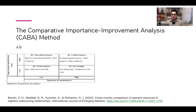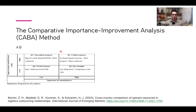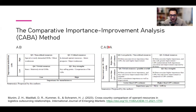Hello everyone, welcome to Research Hub again. This is the final part of the KABA method video, where I'm going to show you the Comparative Importance Improvement Analysis - the KABA method - and how we implement it. As we have already discussed in the third video, we showed how we derive from the IPA to the AB, so importance-performance to importance-improvement. Now we are going to discuss how we derive the KABA, the Comparative Importance Improvement Analysis.